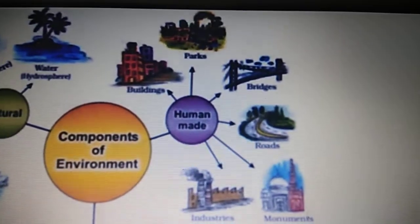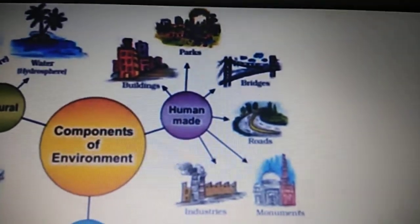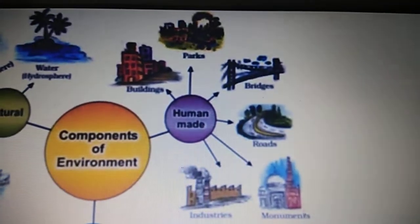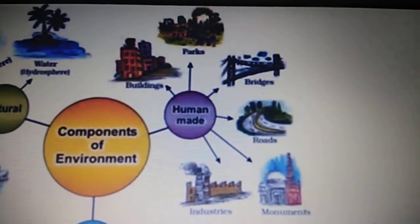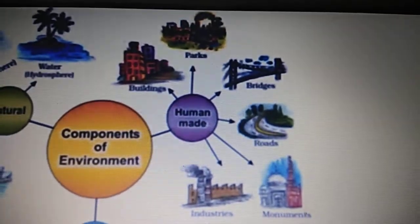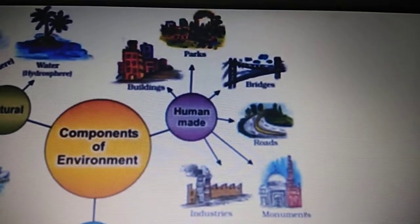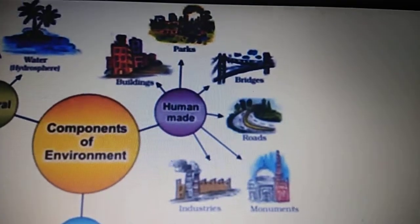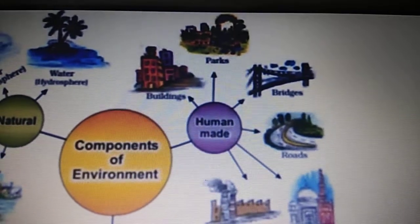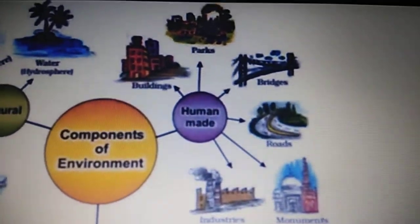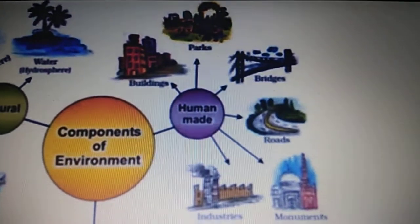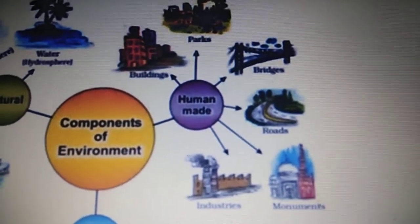He has learnt to domesticate animals, learnt to grow crops, invented the wheel, started trade and commerce, transportation, and the internet — the latest thing is the internet, from where we communicate at just the press of a button. All these come under human-made. Humans with all their knowledge and skills make all these things for their own needs, and this is the way they change the environment.